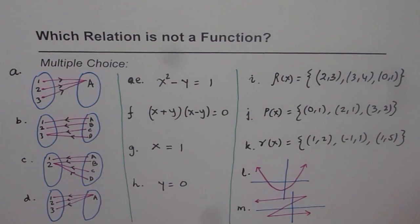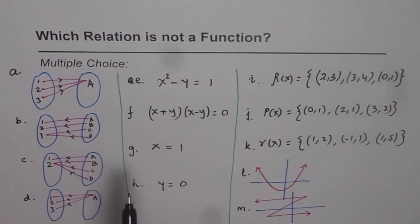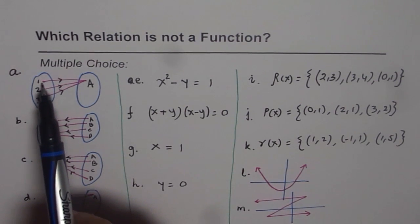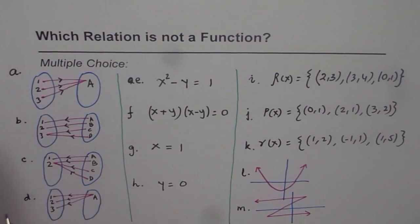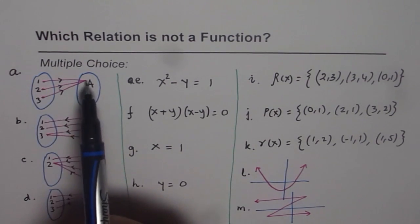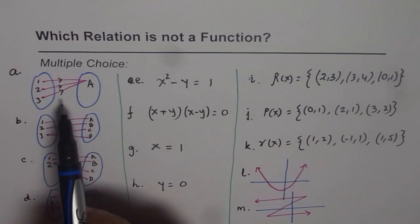Now let's go through them one by one. A function is something where every input is associated with a unique output — you cannot have one input associated with more than one output. For the first mapping diagram, 1 is associated with A, 2 is associated with A, and 3 is associated with A, so this is a function.